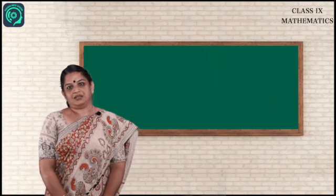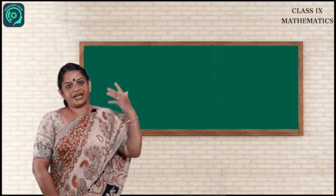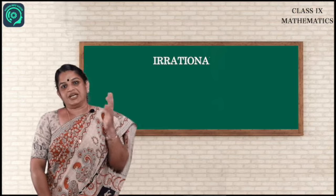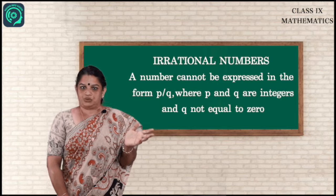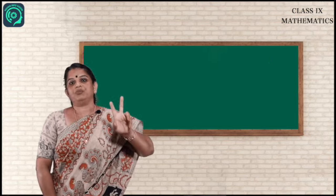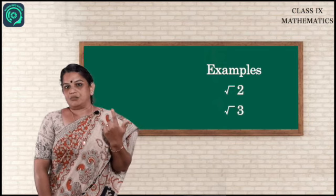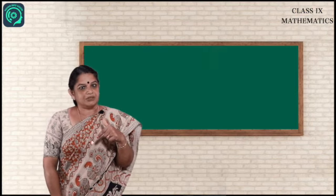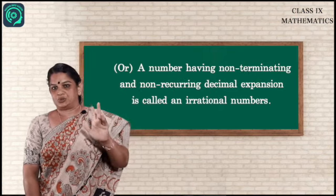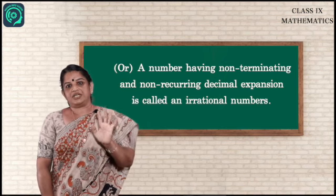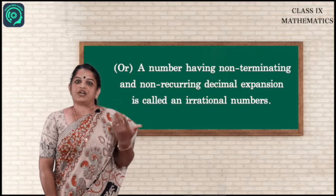Now let us see the definition of irrational numbers. Just like 'rational' and 'irrational' are opposites in English, irrational numbers are the opposite of rational numbers. A number that cannot be expressed in the form p/q, where p and q are integers and q ≠ 0, is called an irrational number. Examples are π, √2, and √3. An irrational number has a non-terminating and non-recurring decimal expansion, unlike rational numbers which are terminating or non-terminating recurring.